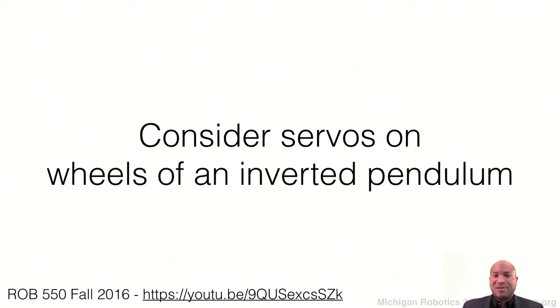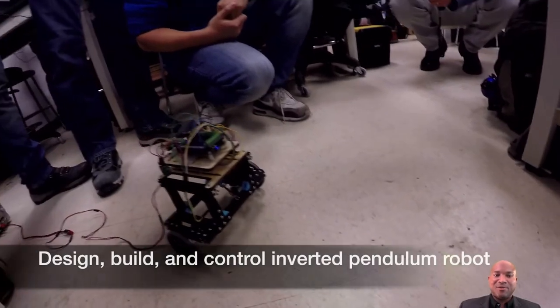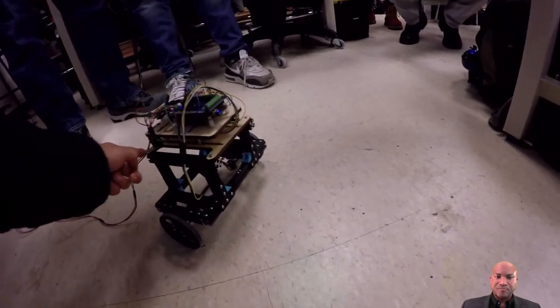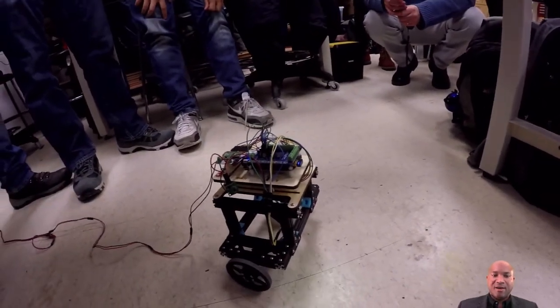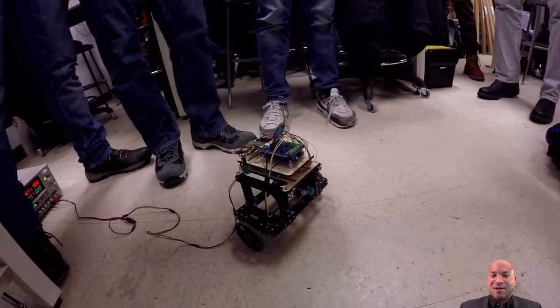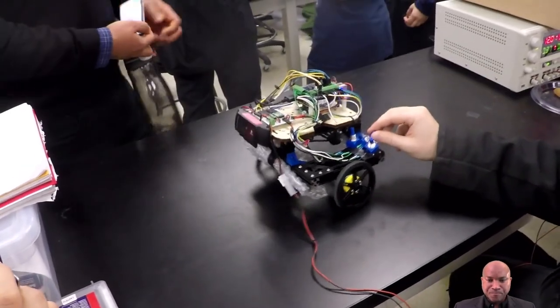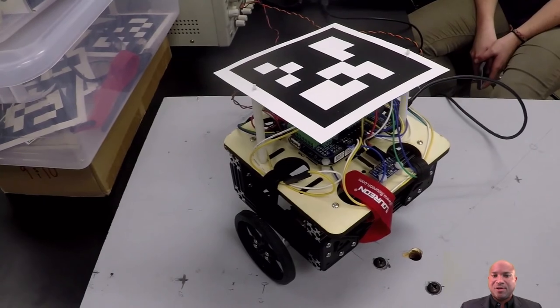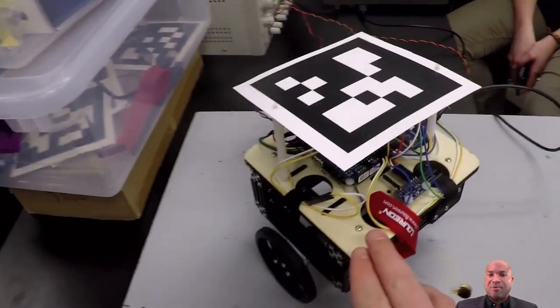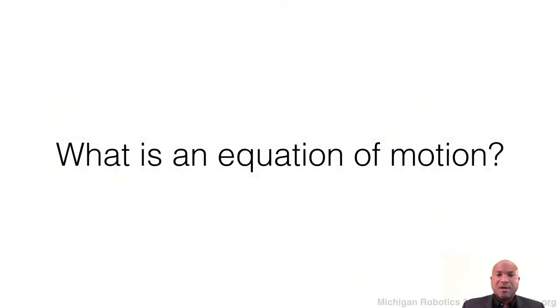To foreshadow the type of controls we want to use: consider an inverted pendulum. This is a system with two wheels, each with motors in a differential drive position. Students in Robotics 550 wrote controllers to make the robot stay upright — just like a Segway-style robot.